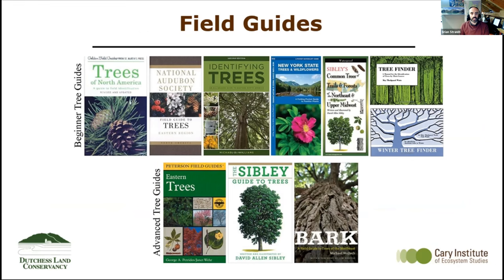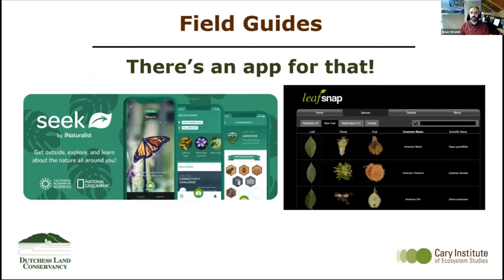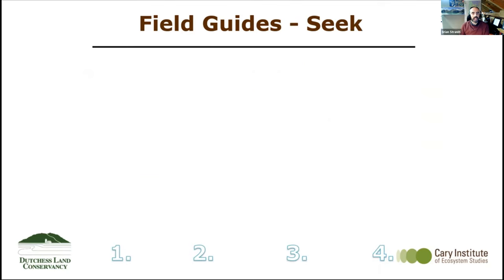There are lots of different field guides — beginner guides, advanced guides, ones based on seasonality, bark, all sorts of different things. These are all considerations and tools for your toolbox. It's all part of building your knowledge slowly over time. And of course, there's an app for that. The main two apps that folks tend to use are Seek from iNaturalist and LeafSnap. Tonight we're going to focus on the Seek app. It's very good at identifying leaves and flowers, but you can get a mixed reaction on bark. Download the app to your smartphone — it's very intuitive.